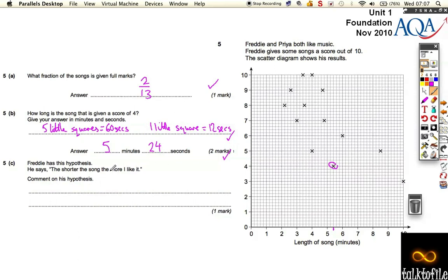The last bit, or the last bit on this page, part C, says, Freddie has the hypothesis. He says, the shorter the song, the more he likes it. Comment on his hypothesis.